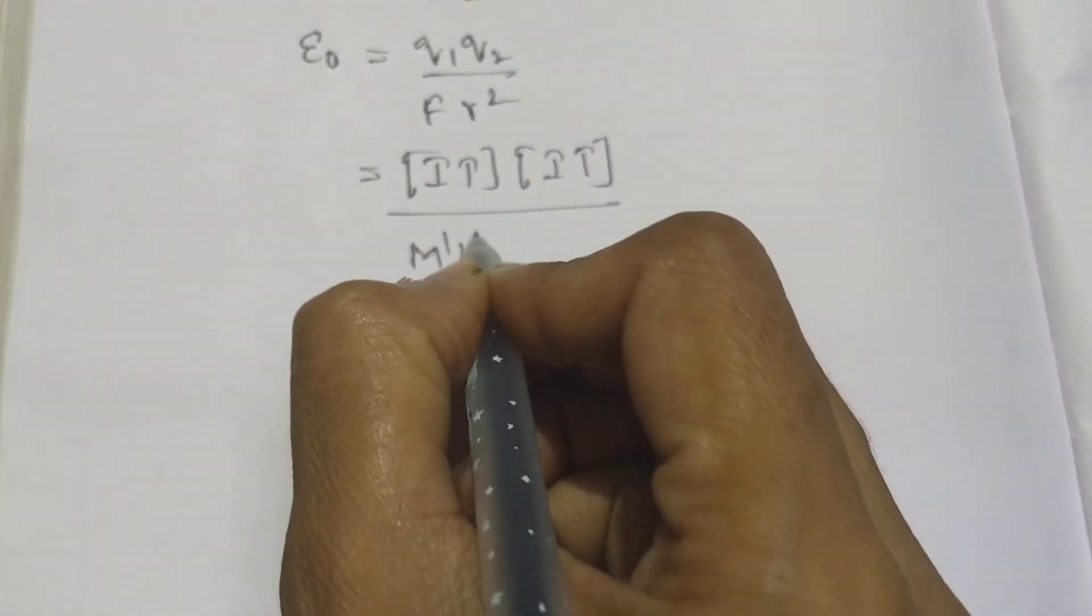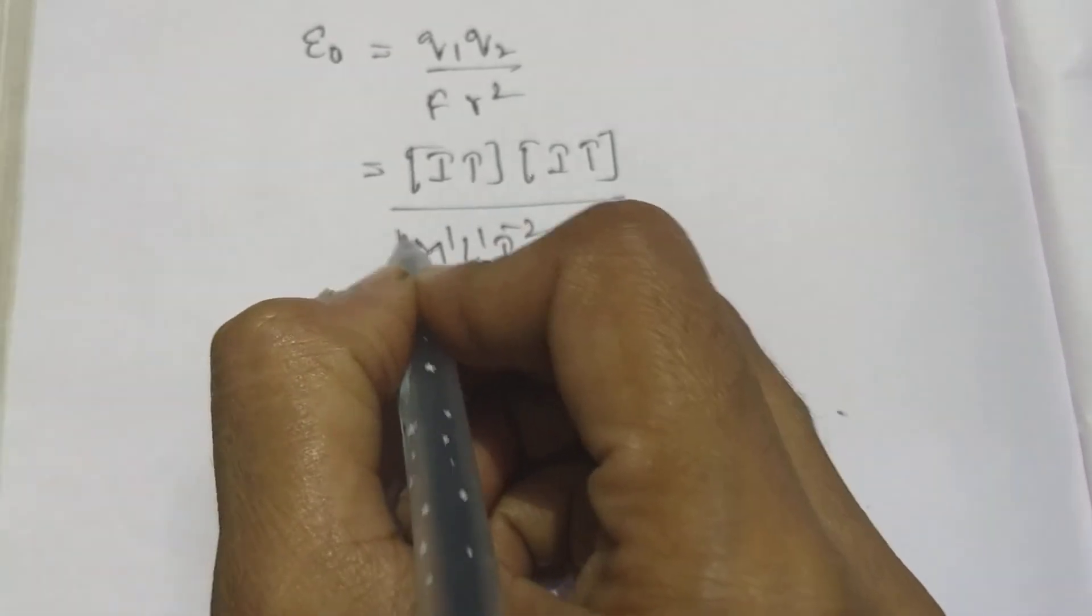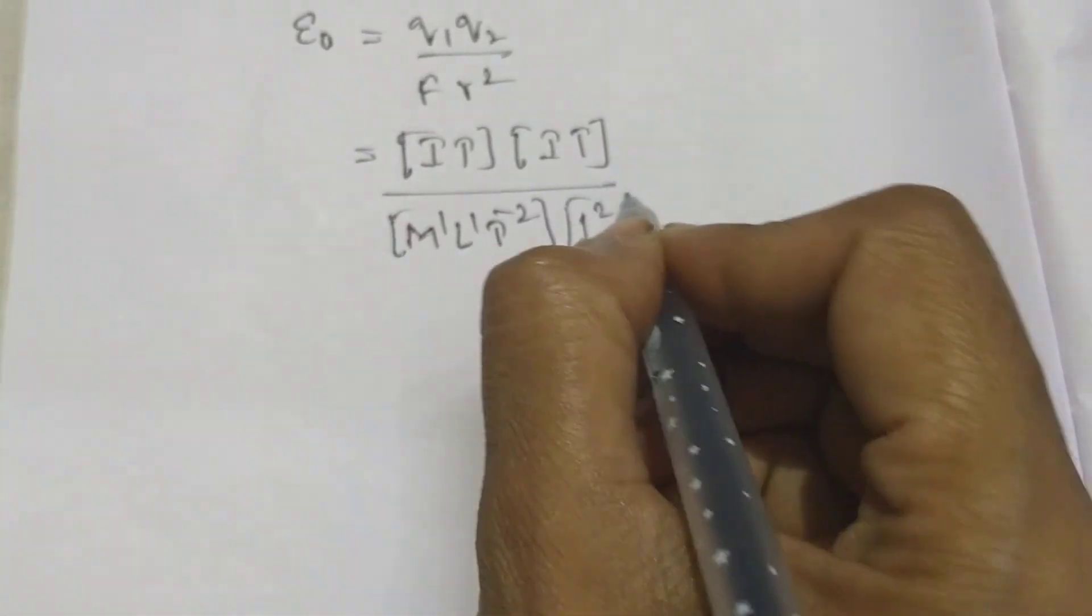F is M power 1, L power 1, T power minus 2. This is R square, means L square.